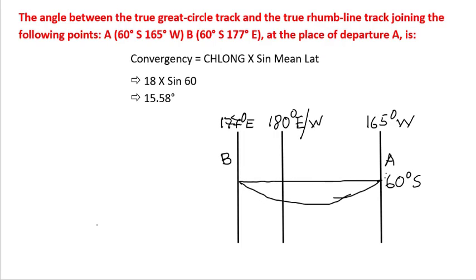We know that convergence is equal to Ch-long times sine mean latitude. We have Ch-long as 18 degrees and latitude at 60. So 18 times sine 60 will give us a convergence value of 15.58 degrees.